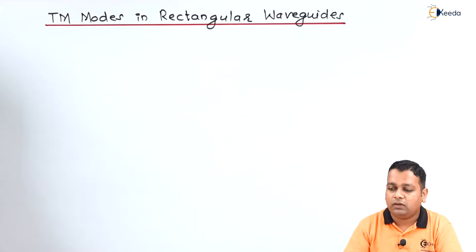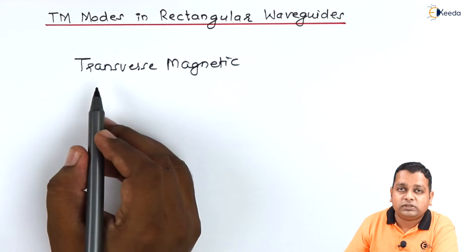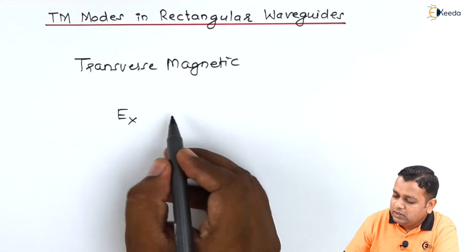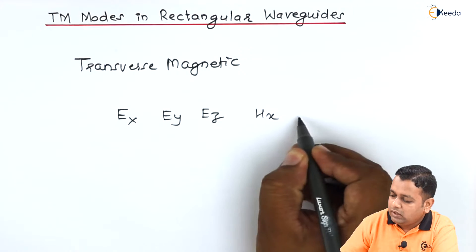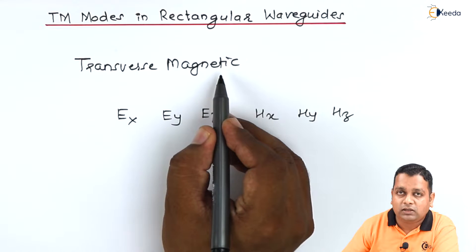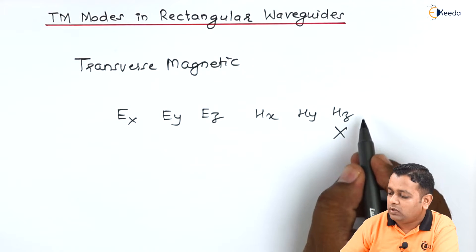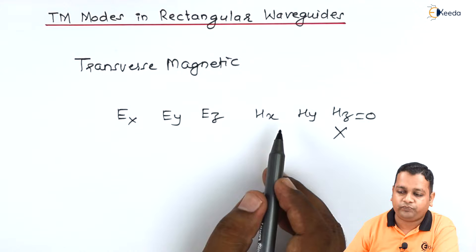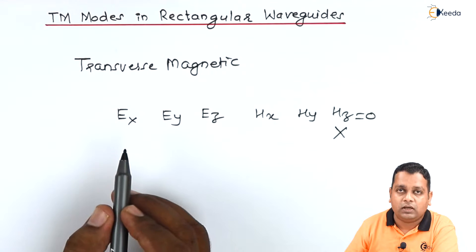We start with our topic where TM stands for transverse magnetic. Transverse stands for perpendicular. As already discussed, in rectangular coordinates we have Ex, Ey, Ez — the three components of electric field — and Hx, Hy, Hz — the three components of magnetic field. Since it is transverse magnetic, with the direction of propagation along positive z, the Hz component will be absent, so Hz equals zero. The remaining five components may exist for wave propagation.